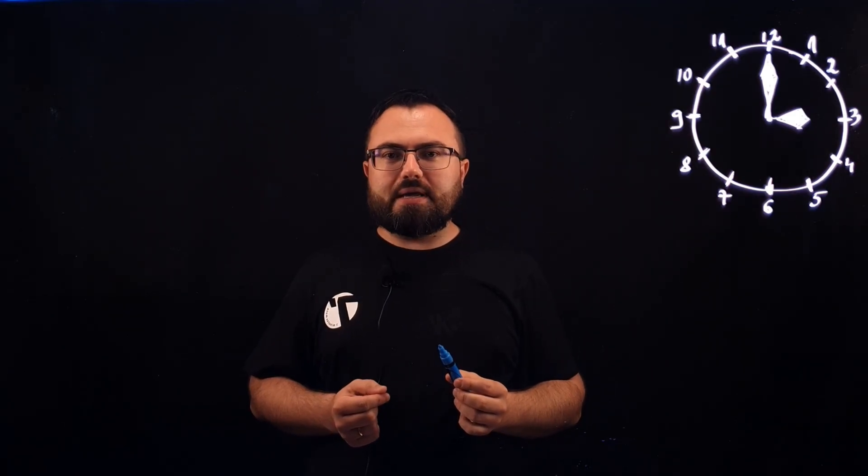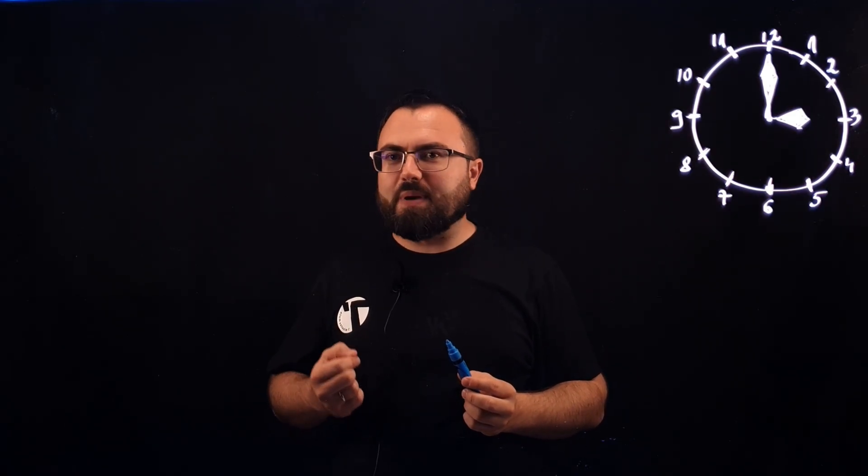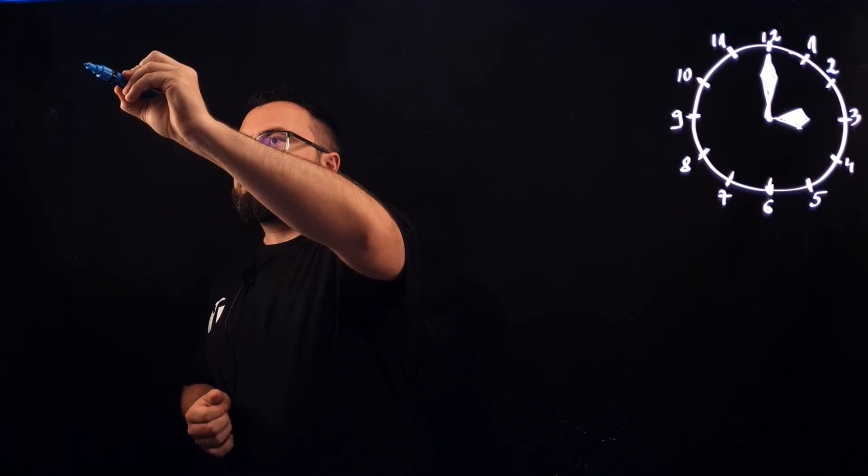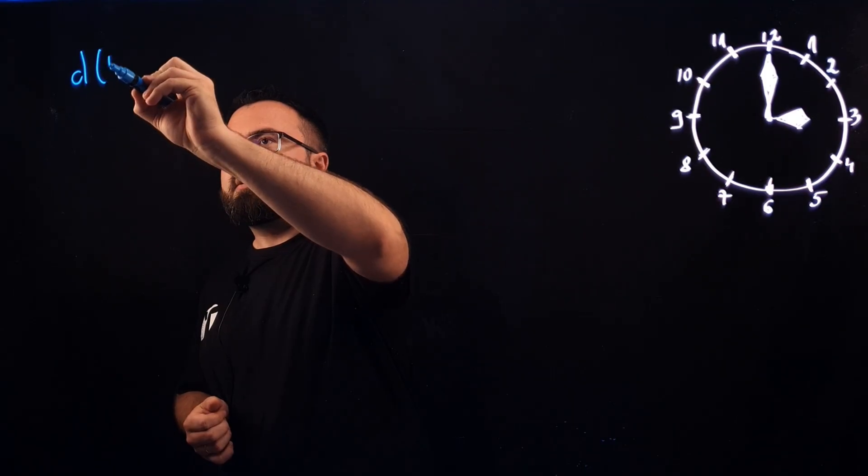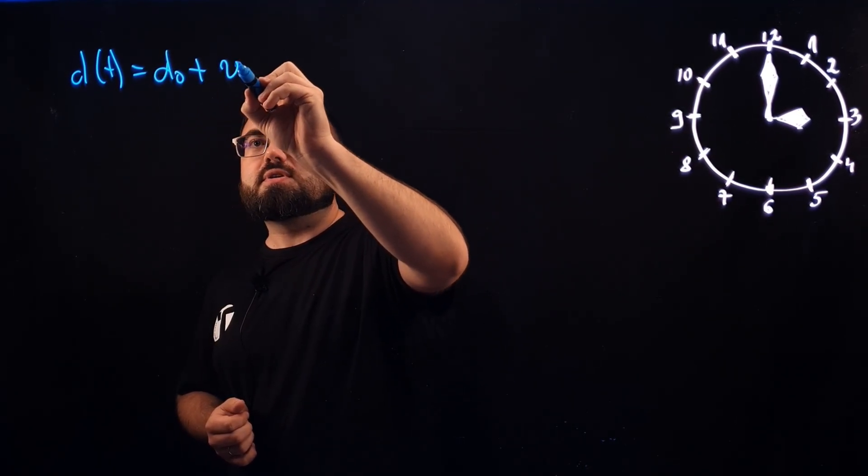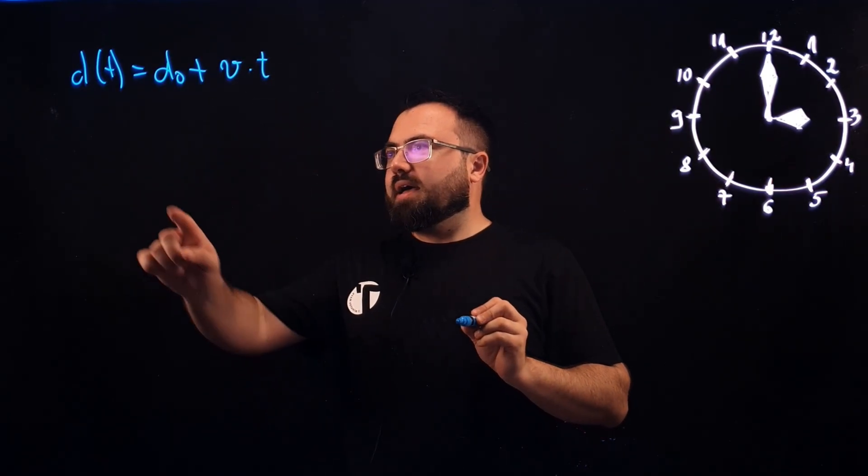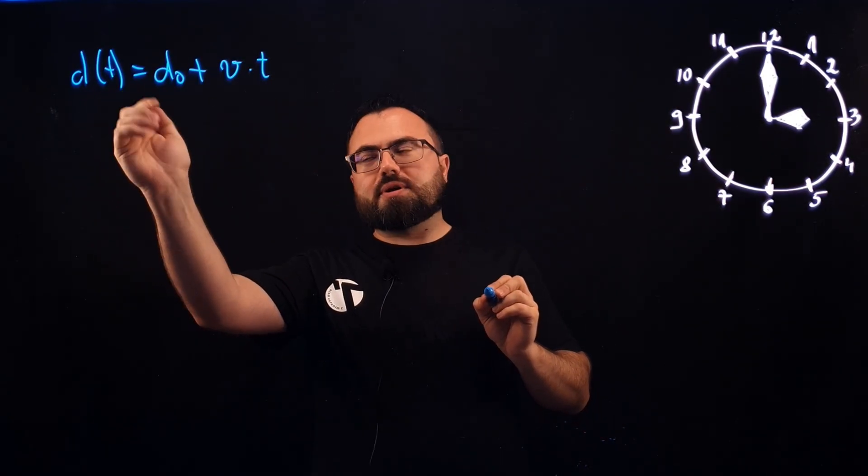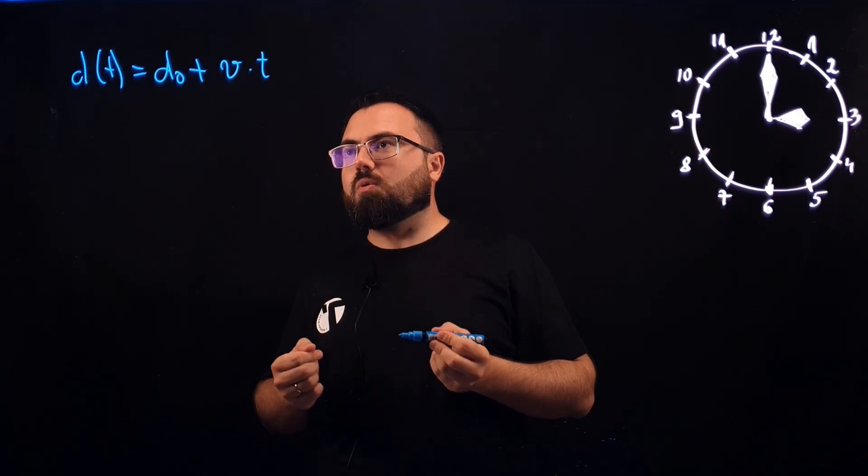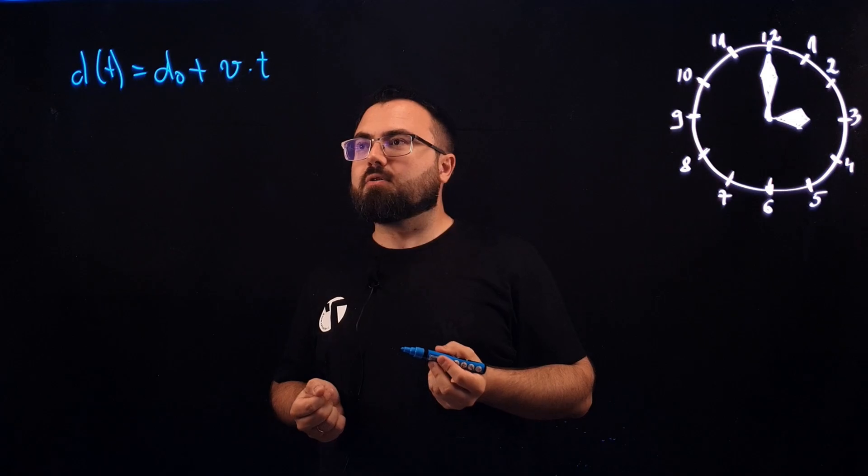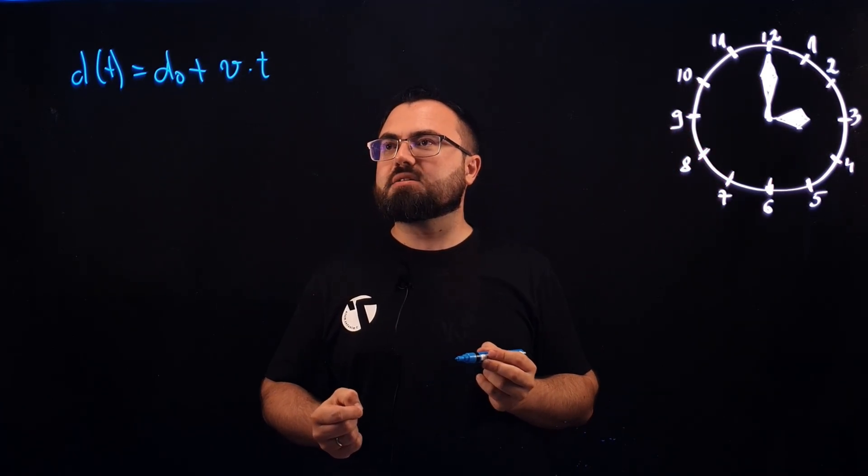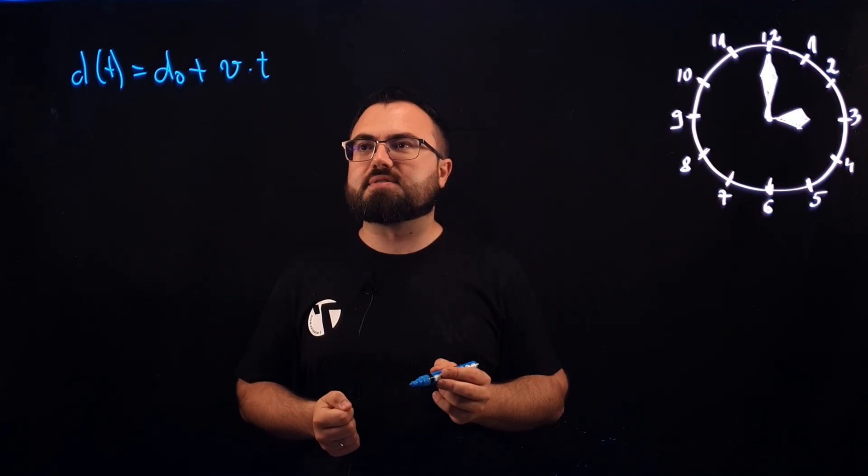So what we're going to do is we are going to start with the equation of space. This is a general one. It looks like this: d(t) equals d0 plus v multiplied by t. d is a division or you can also count it as distance. d0 is the initial distance or the offset from where each hand will start. v is the speed of every hand pointer and t is the time.